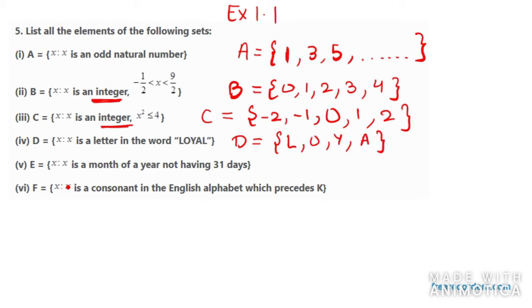Now in the fifth one, it says x is a month of year not having 31 days. So we have first of all February, we have April, we have June, we have September, we have November, and end the bracket.